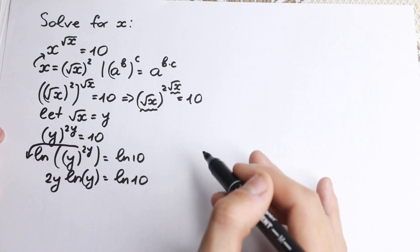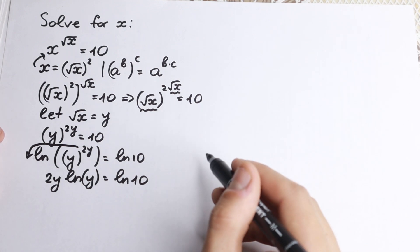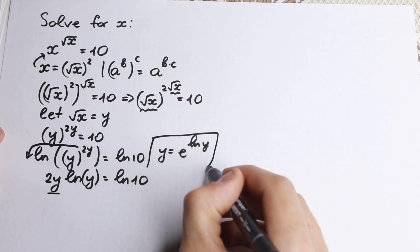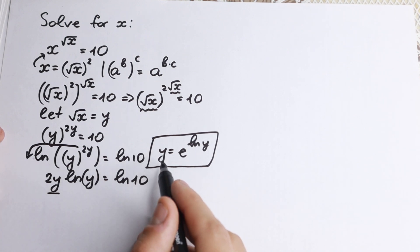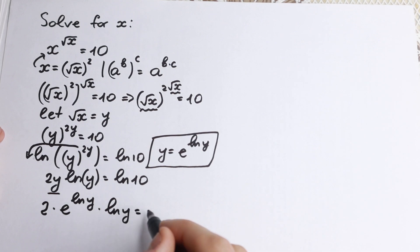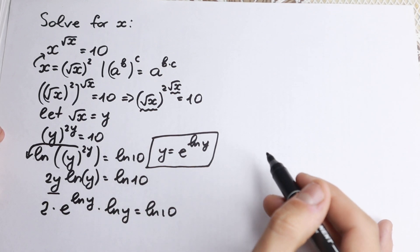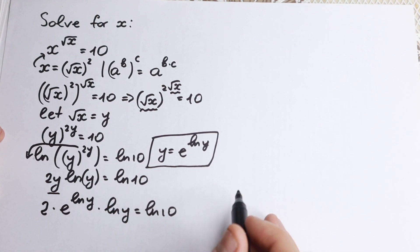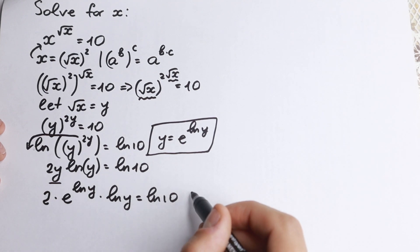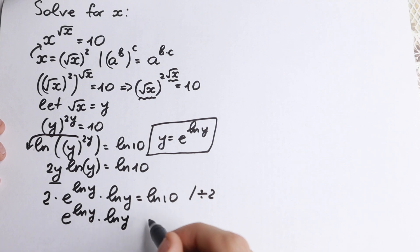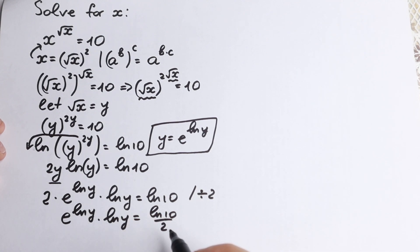The next step involves the Lambert W function. We write y as e to the power natural log y — this is an important identity. Substituting, we get 2 times e to the power natural log y times natural log y equal to natural log 10. Dividing both sides by 2, we have e to the power natural log y times natural log y equal to natural log 10 over 2. Now all variables are on the left and a constant is on the right.